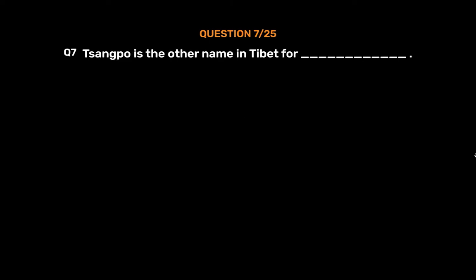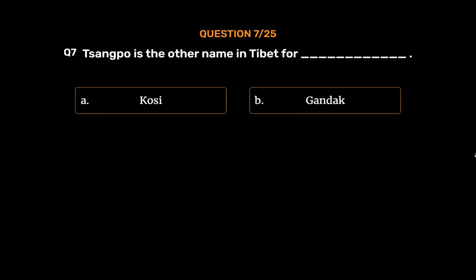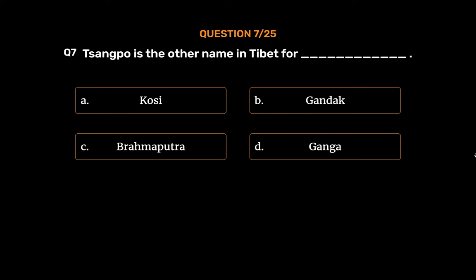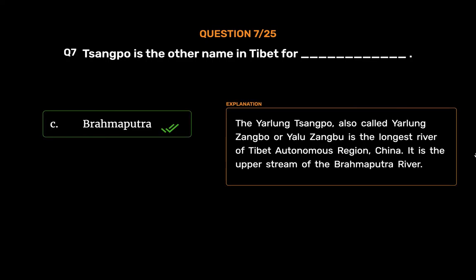Question No. 7. Sangpo is the other name in Tibet for _____. Option A: Kosi. Option B: Gandak. Option C: Brahmaputra. Option D: Ganga. The correct answer is Option C: Brahmaputra. The Yarlung Tsangpo, also called Yarlung-Zangbo or Yalu-Jangbo, is the longest river of Tibet Autonomous Region, China. It is the upper stream of the Brahmaputra River.